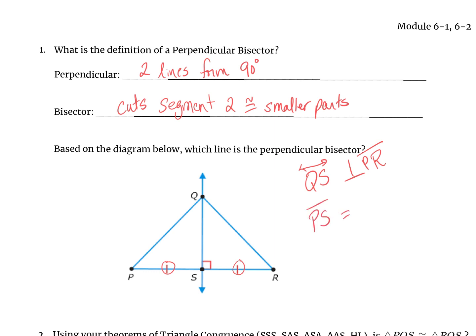So PS is congruent to RS. Remember that a straight angle is a total of 180 degrees, so if angle QSR is 90 degrees, that makes angle QSP also 90 degrees, because 90 plus 90 equals 180.